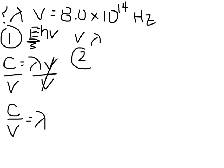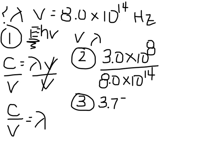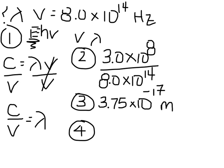Step two is to plug in your known values. We know the speed of light is 3 times 10 to the 8th meters, and we've been given the frequency as 8 times 10 to the 14th. Step three is to solve. That gives us 3.75 times 10 to the negative 7th. Step four is to check your units and circle your answer. Our units here would be meters.